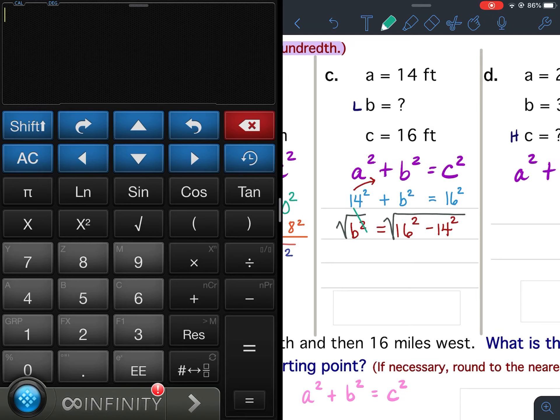And on my calculator, I do the square root of 16 squared. It's the leg that we're solving for, so it's minus 14 squared. Hit enter.